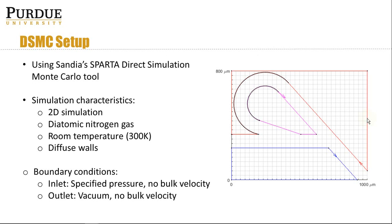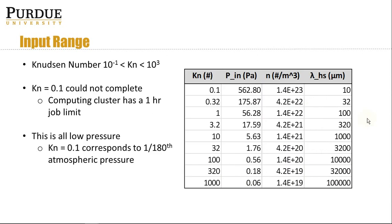For boundary conditions, I specified target pressure at the inlet with no bulk velocity, and the outlet was a vacuum with also no bulk velocity. This is the input range — we looked at Knudsen numbers from 0.1 to 1000. The Kn=0.1 case couldn't complete on our computing cluster, but that's okay.